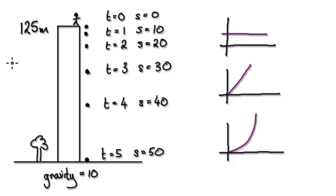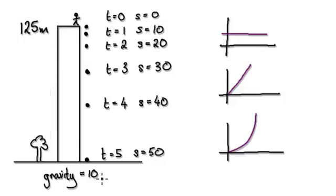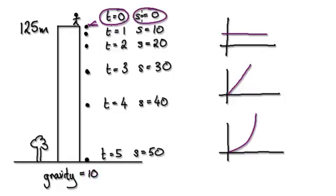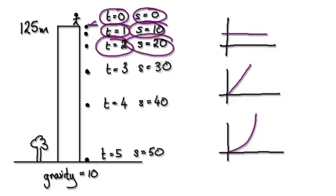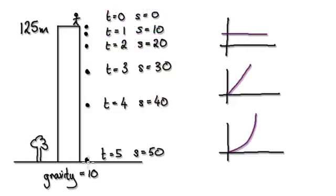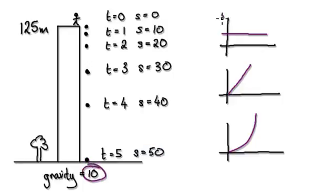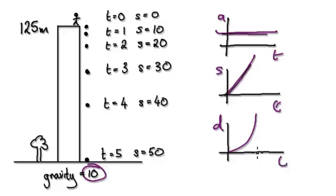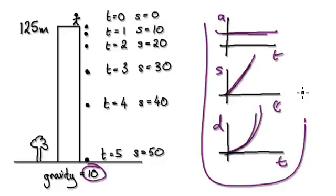We've seen this before when we first started projectiles. You're standing on top of a building of height 125, gravity is 10, and you release a cannonball. When time equals zero, the speed is zero — you're releasing it from rest. One second later the speed is 10, two seconds later the speed is 20, and so on. By the time it's just about to hit the ground, the speed will be 50. Under constant acceleration, the acceleration-time graph is flat, the speed-time graph is linear, and the distance-time graph is a curve.